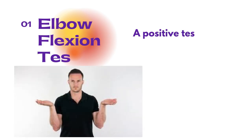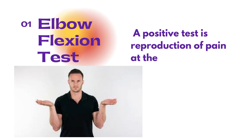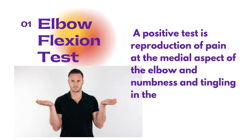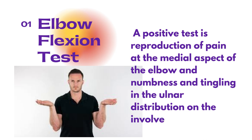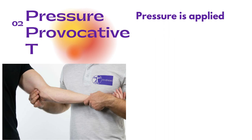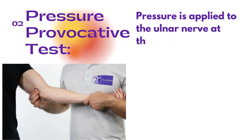A positive test is the reproduction of pain at the medial aspect of the elbow, followed by numbness and tingling in the ulnar distribution on the involved side. The elbow flexion test is performed in the way shown in the slide.